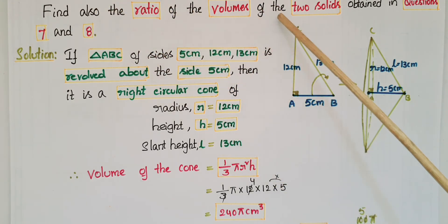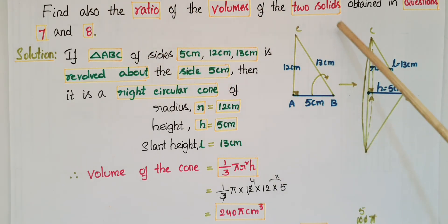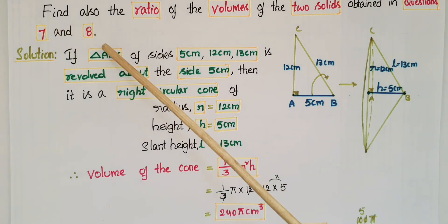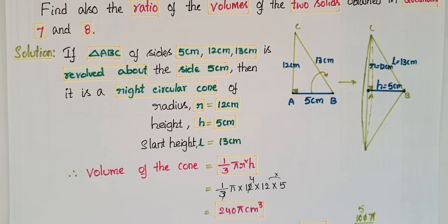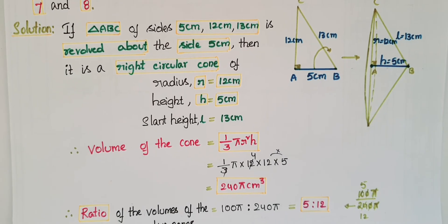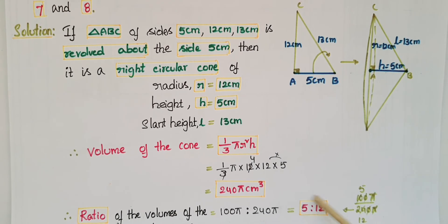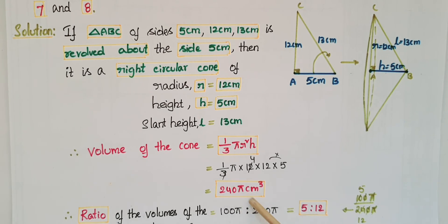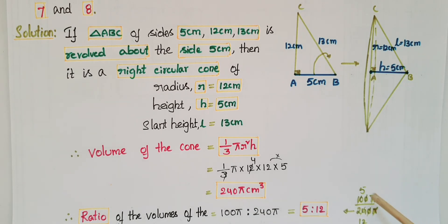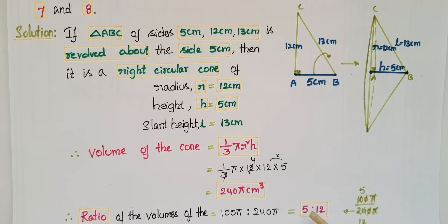Now we have to find the ratio of the volumes of the two solids obtained in questions 7 and 8. The ratio of the two cones is 100π to 240π. Dividing, cancel the π, then 100 divided by 240 simplifies: 5 twos are 12 fours are 24, so the ratio is 5 is to 12.